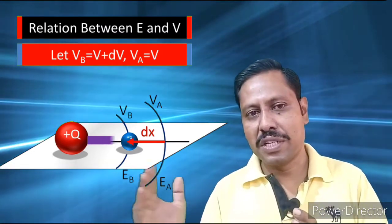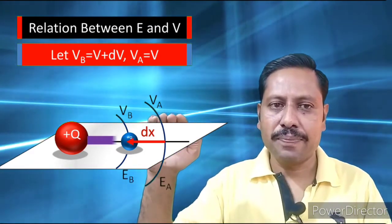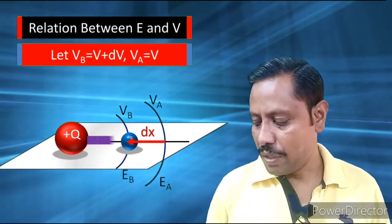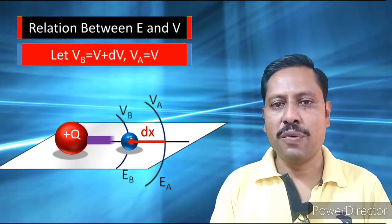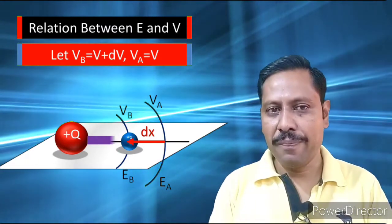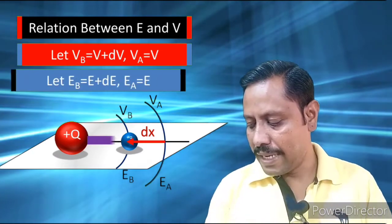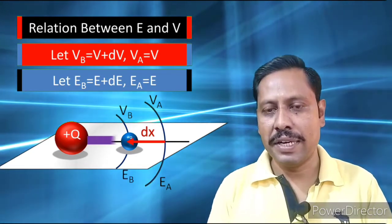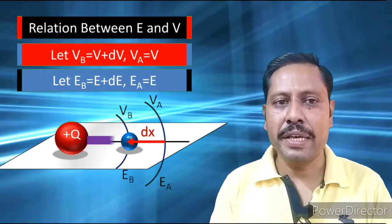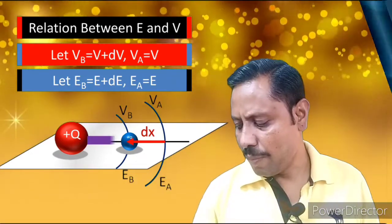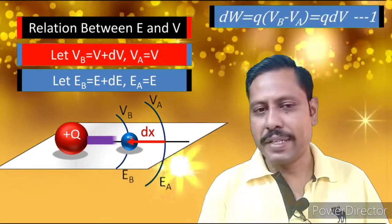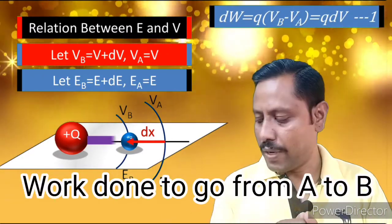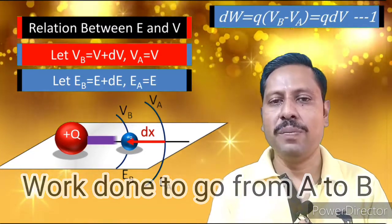When we are going towards the charge, the value of electric potential will increase. Similarly, the electric field will also increase because we are going closer to the charge. So VB equals V plus DV and VA equals V.